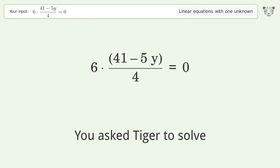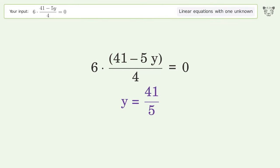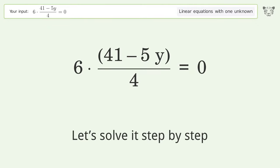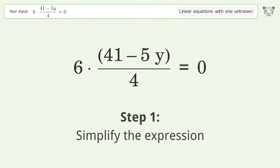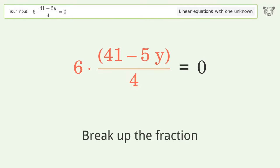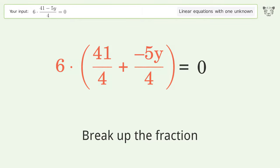You asked Tiger to solve this. This deals with linear equations with one unknown. The final result is y equals 41 over 5. Let's solve it step by step. Simplify the expression, break up the fraction, and expand the parentheses.